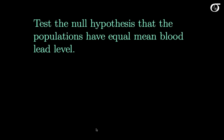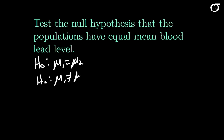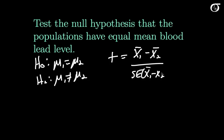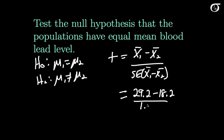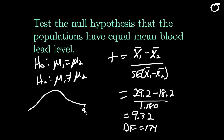Let's test the null hypothesis that the populations have equal mean blood lead levels — that mu1 equals mu2 — against a two-sided alternative. We take the difference in sample means and divide by the standard error of the difference: (29.2 minus 18.2) divided by 1.180, giving a t statistic of 9.32. With degrees of freedom of 174, for a two-sided test the p-value is double the area to the right of 9.32.